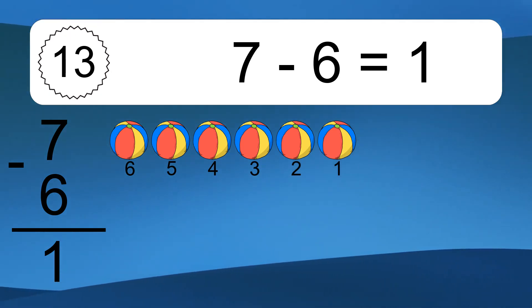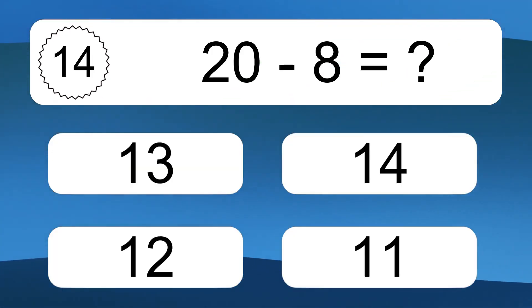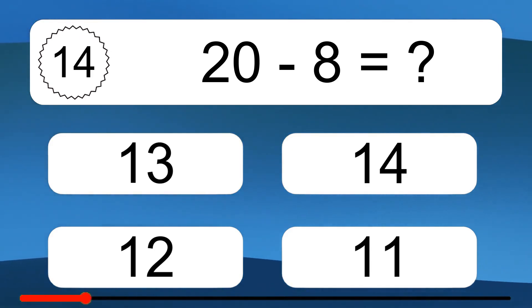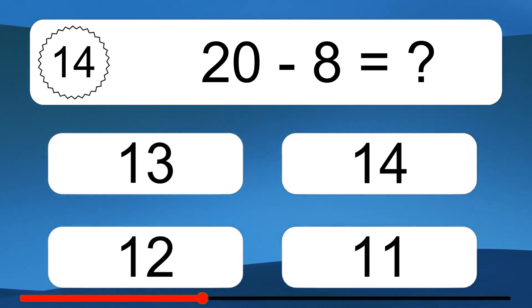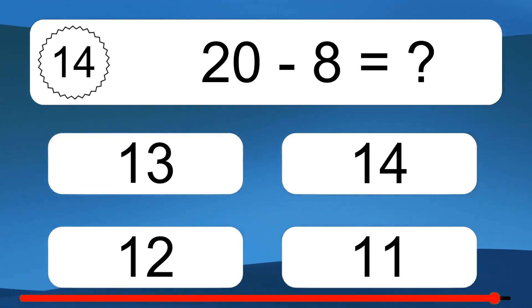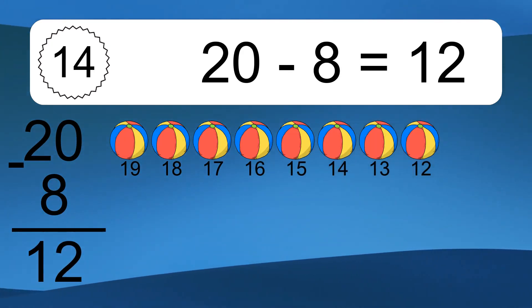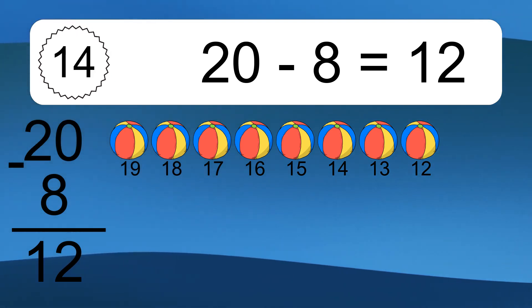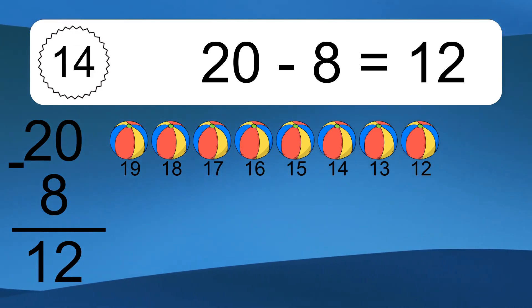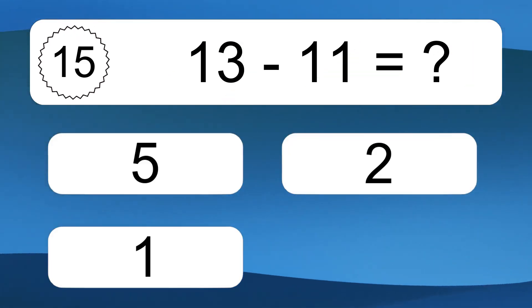20 minus 8 equals what? 20 minus 8 equals 12. Let's count it. 19, 18, 17, 16, 15, 14, 13, 12.